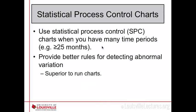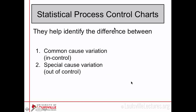There is an even better method: the statistical process control chart, often also called Shewhart charts — for brevity, I'll call them SPC charts. You typically want to use an SPC chart when you have more time periods, say greater than 25. They have better rules for detecting abnormal variation, so in that sense they are superior to run charts. They can also better determine the difference between common cause variation and special cause variation.